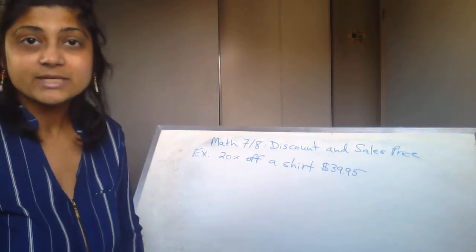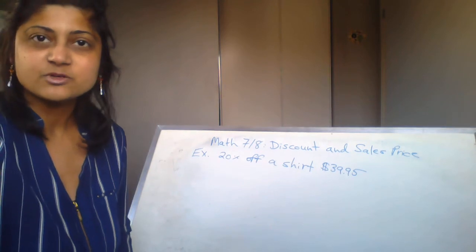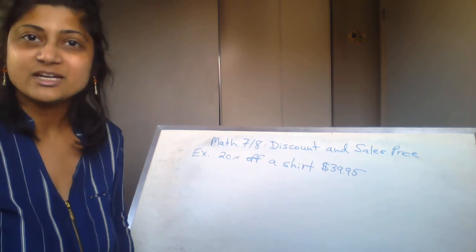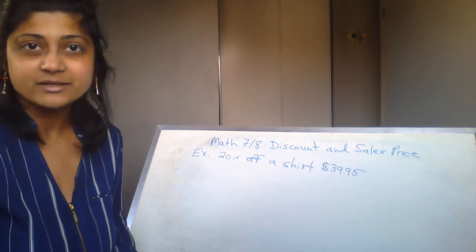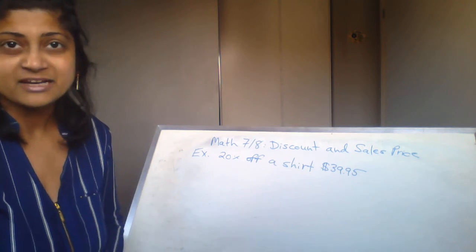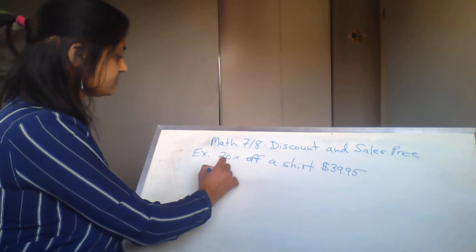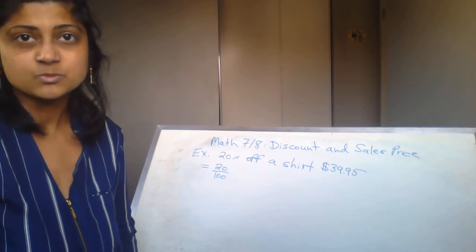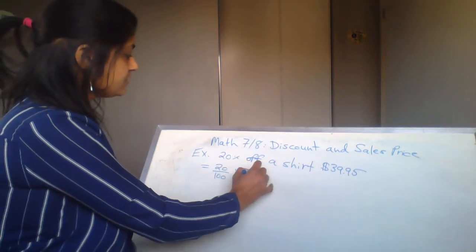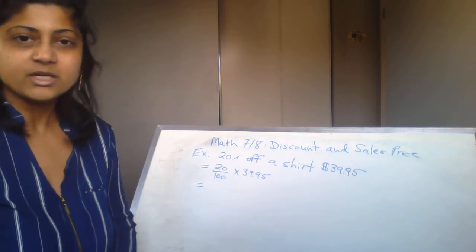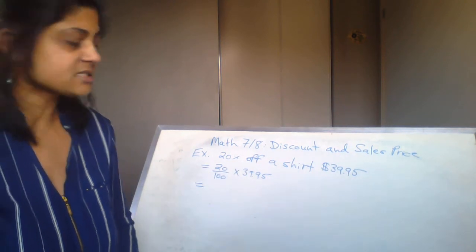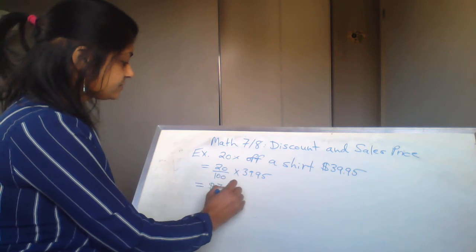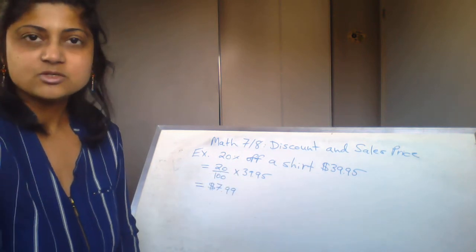This is quite important because if you're someone who likes to go shopping, you can use these discount prices to calculate how much it will cost to buy a pair of jeans or a top. So what we're going to do is 20 over 100 — changing the percent into a decimal — and multiply that by $39.95. So it's 0.20 times $39.95, which gives us $7.99.